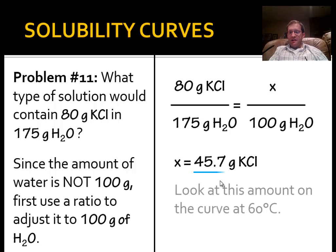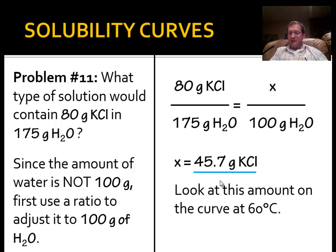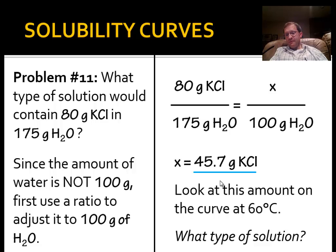Now you can go to the solubility curve. The question asks about 60 degrees Celsius, so go to 60 degrees Celsius and find 46 grams of KCl on your curve. I'll let you answer number 11 and we'll take a look in class. Go to 60 degrees Celsius, go up to 46 grams, find the curve for KCl — are you on the curve, below the curve, or above the curve? On the curve is saturated, below is unsaturated, and above is supersaturated.